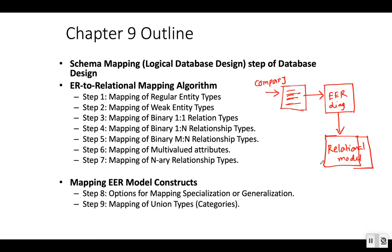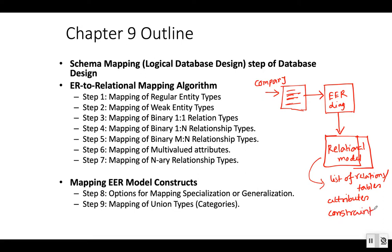The relational model is the real database model and it gives us the exact idea — the list of relations or tables, their attributes, the data type of the attributes, and their constraints. We are already familiar with the relational model from chapter three. In this chapter we are going to see how, having an ER diagram, we can map it to our relational model.